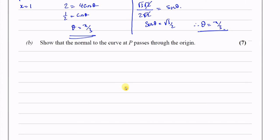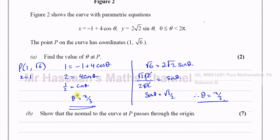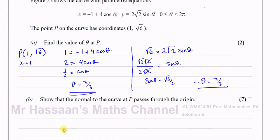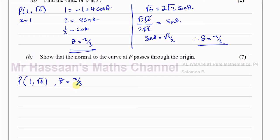Part B says: show that the normal to the curve at P passes through the origin. The normal is a straight line perpendicular to the tangent of the curve. We need the gradient of the curve at P, then the gradient of the perpendicular line. We have point P at coordinates (1, root 6), and we know that at P, theta equals pi over three.